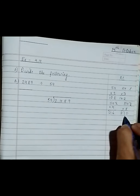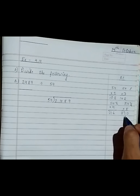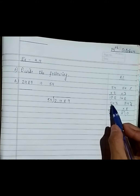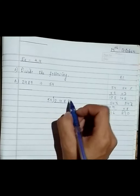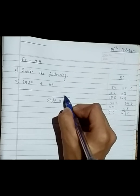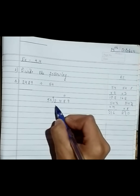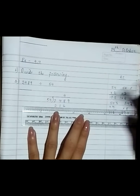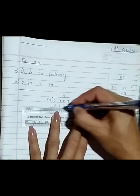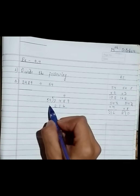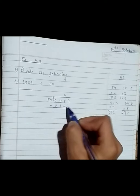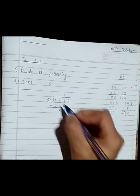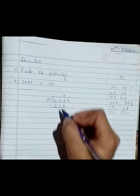270 exceeds 248, so we will take 54 into 4 and write 216. Then we subtract 216 from 248: 8 minus 6 is 2, 4 minus 1 is 3, 2 minus 2 is 0.